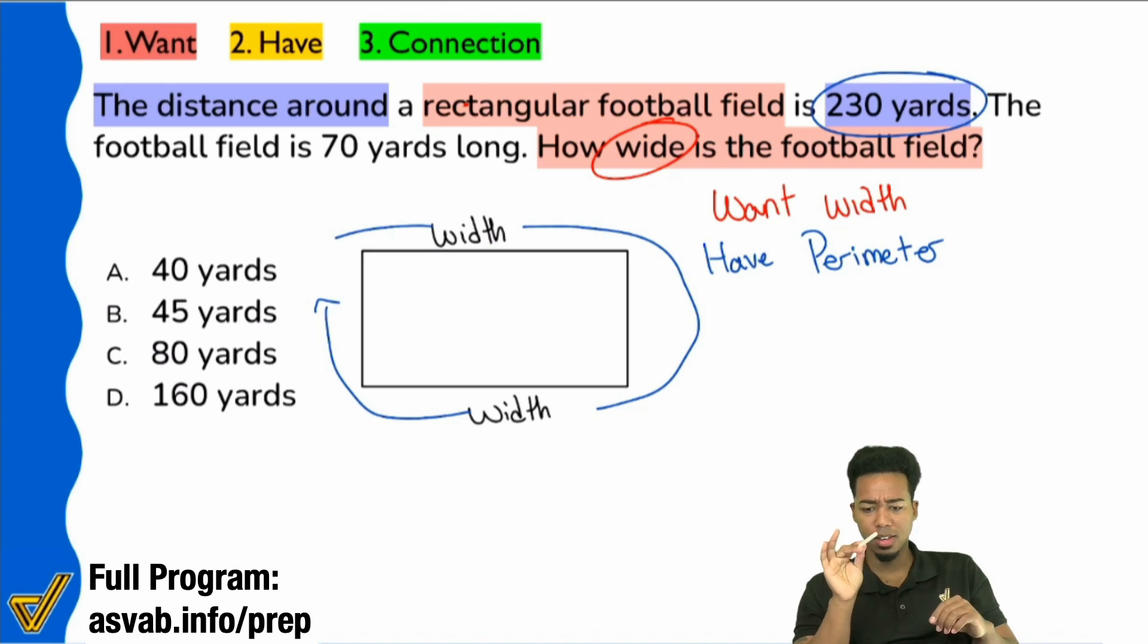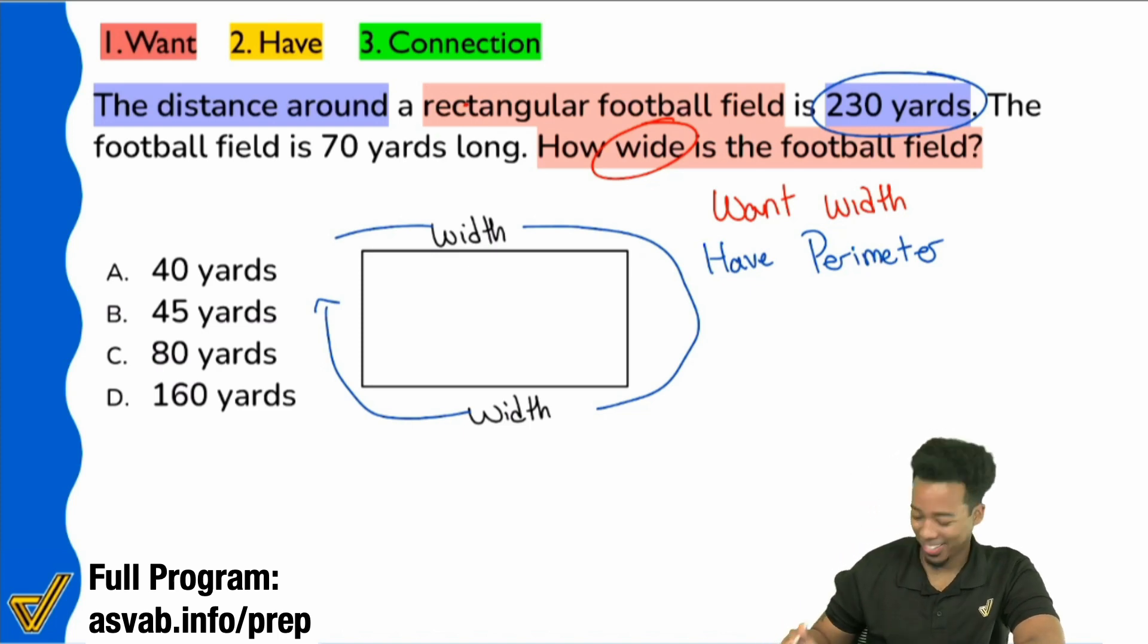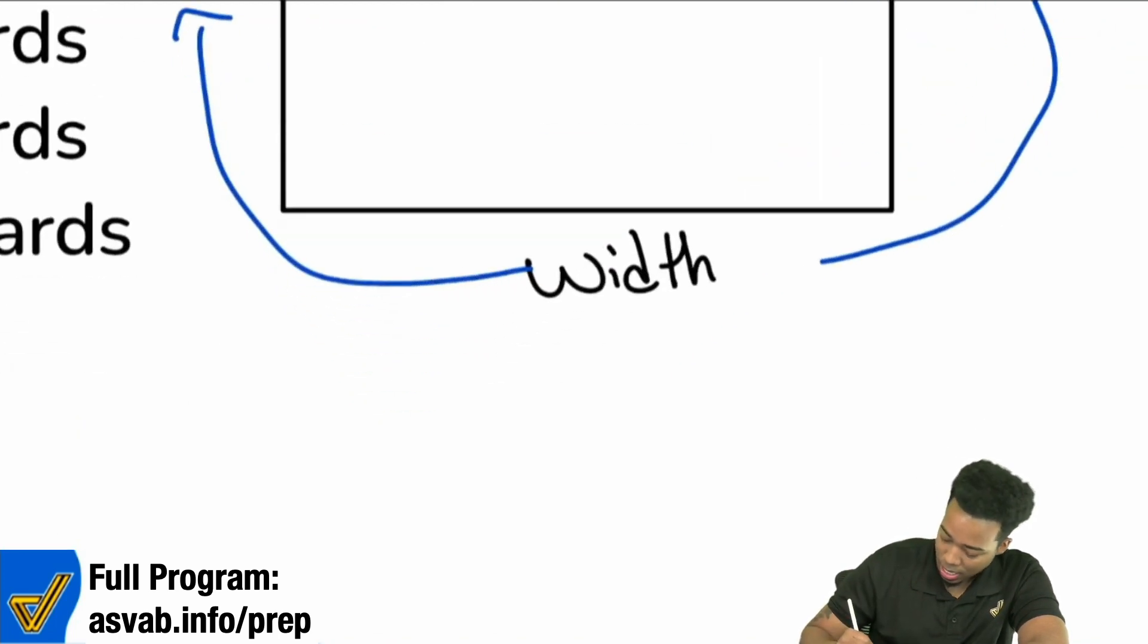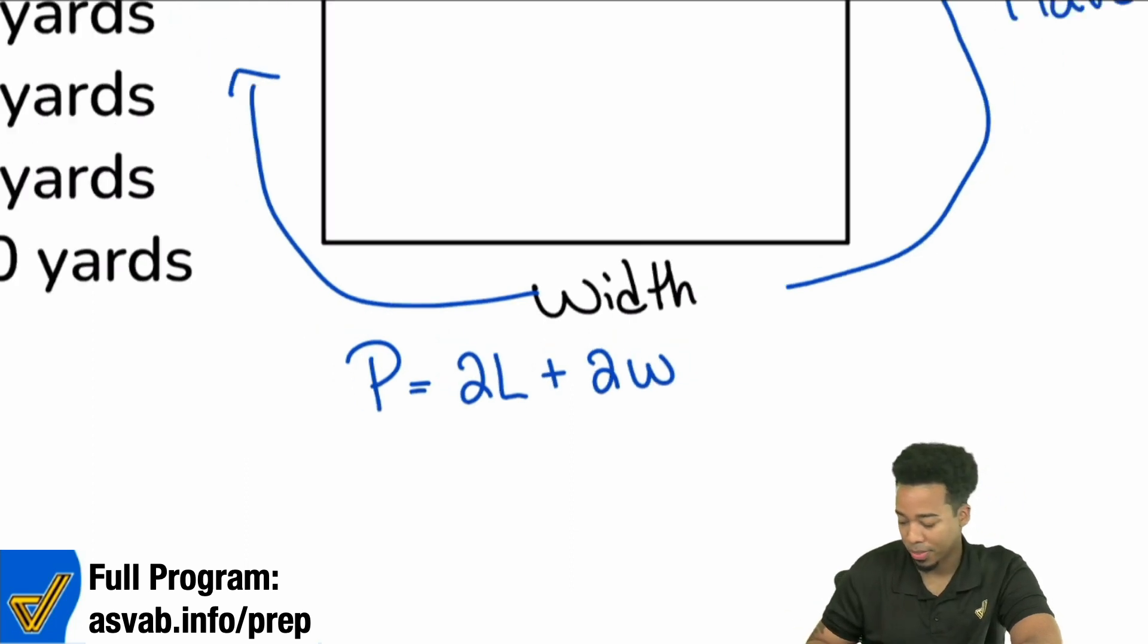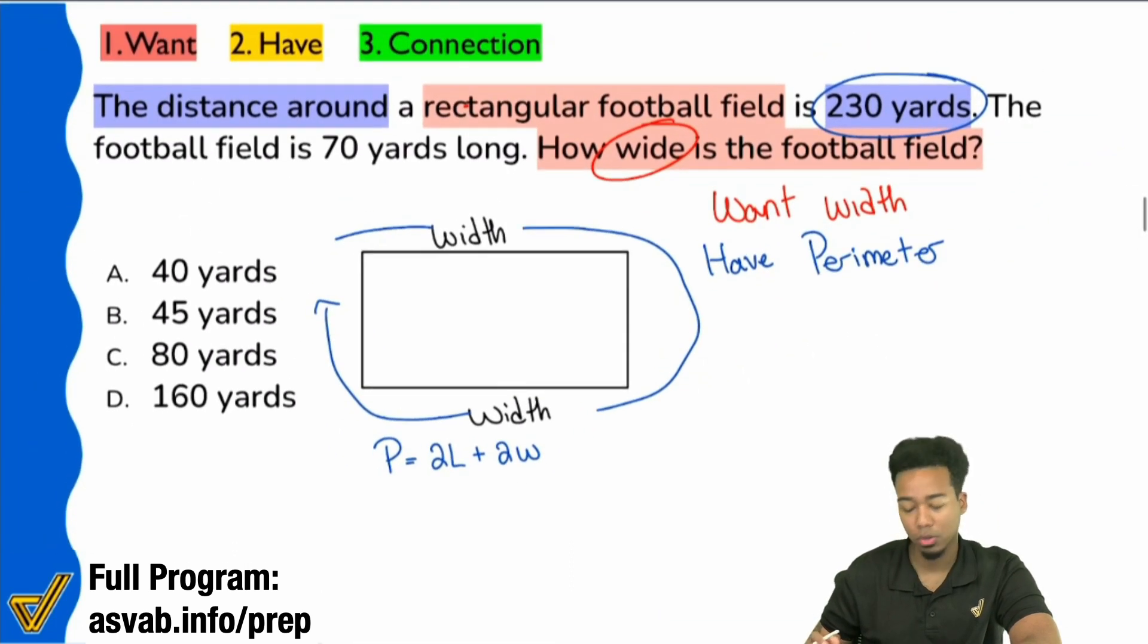Perfectly stated there. The connection is the equation for the perimeter of a rectangle. Let me write this down for you. The perimeter of a rectangle is two times the length plus two times the width. And just to make sure you understand where that even comes from, pay attention.